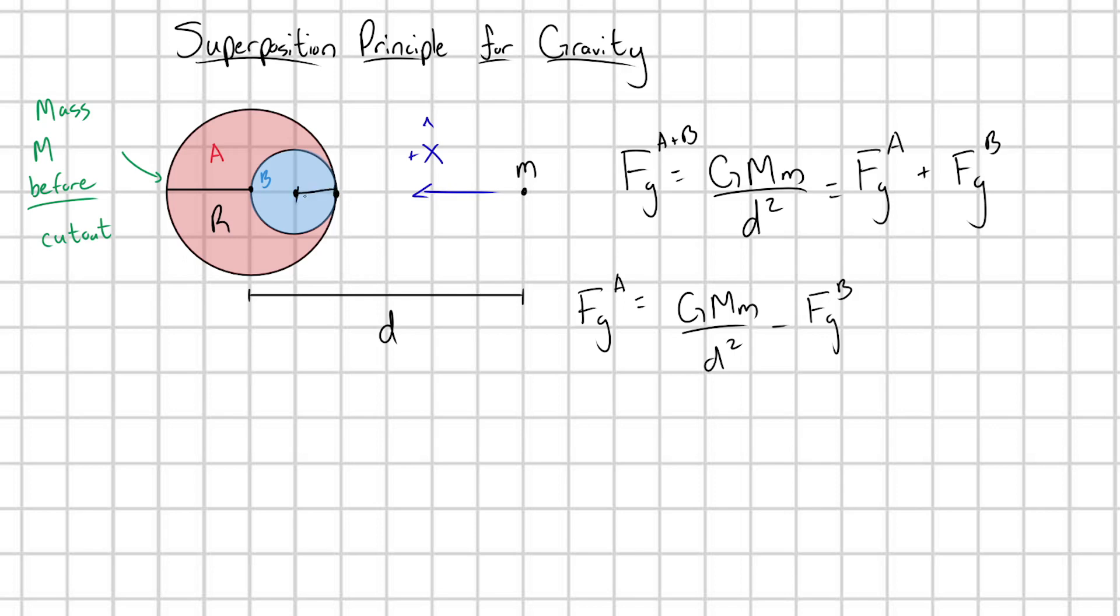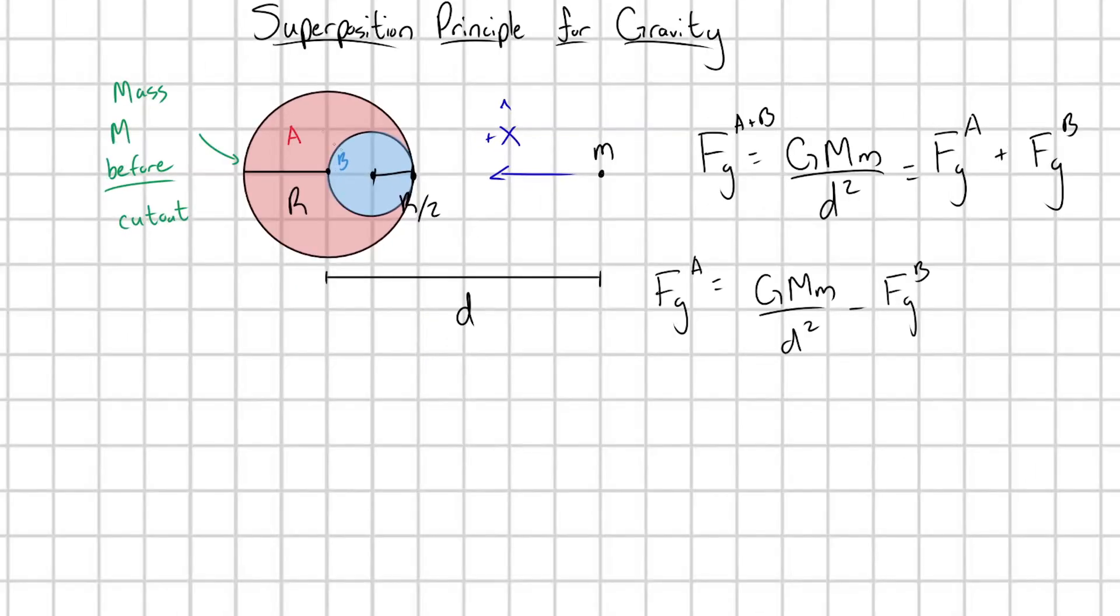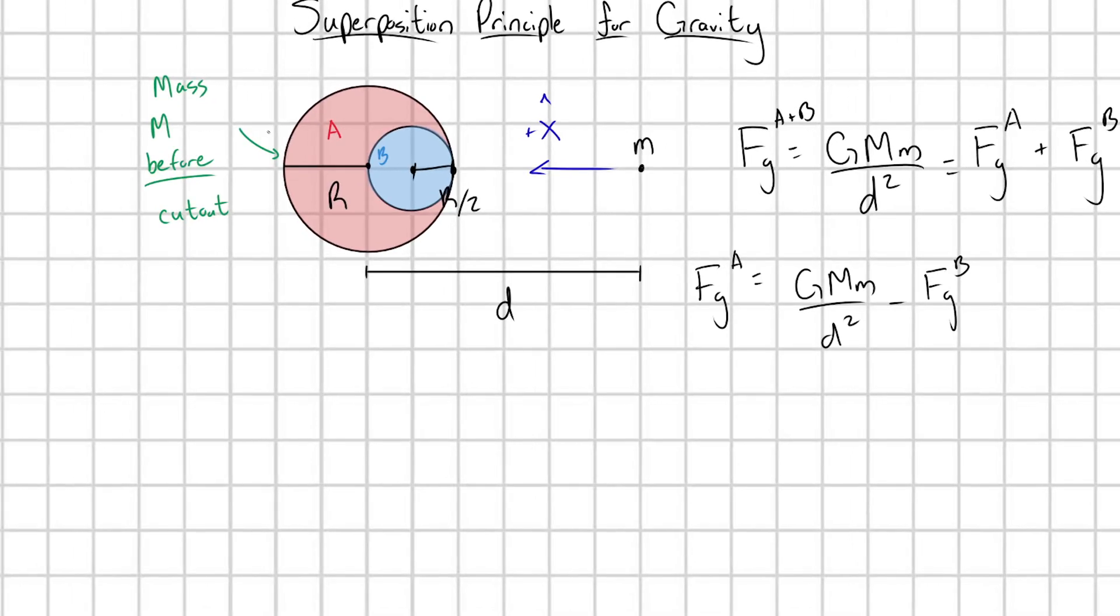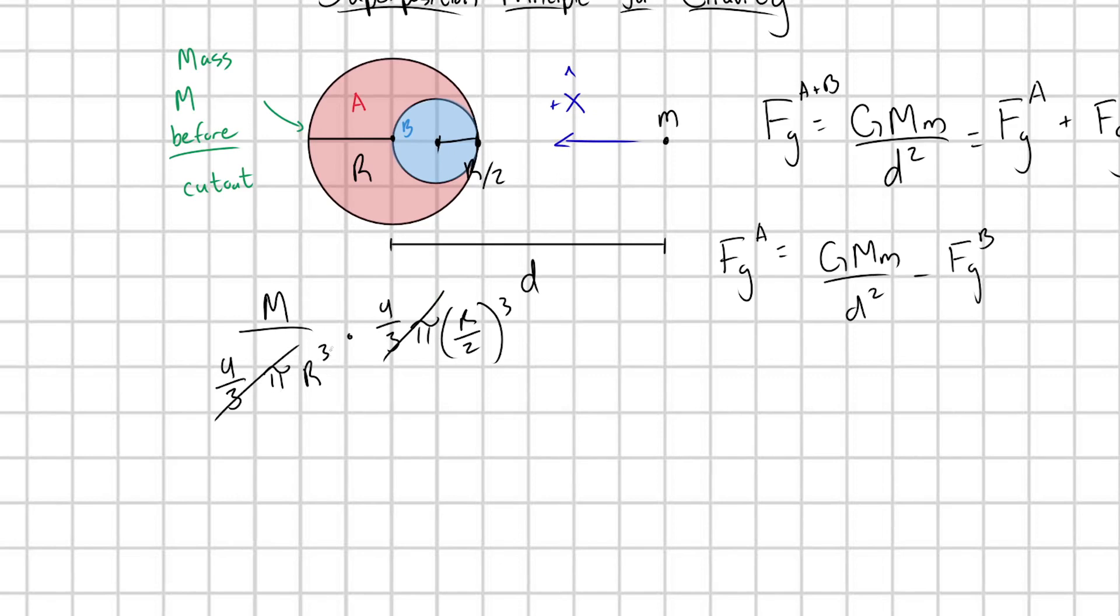This is going to be R over 2 because our total diameter of this little subsection is capital R. Let's go ahead and start by finding the mass of subsection B. If we know that our total planet has a mass of M and this is a uniform planet, then let's get our mass density by taking this total mass M and dividing by the total volume of this entire planet, four-thirds pi capital R cubed. Now we're going to multiply that mass density by our little subsystem volume here, which would be four-thirds pi times R over 2 cubed. And we're going to get lots of canceling, and we're going to be left with M over 8. So the mass of this little subsection B would be M over 8.